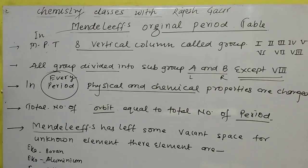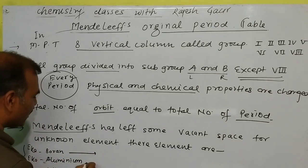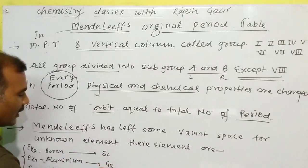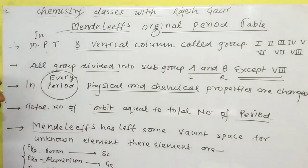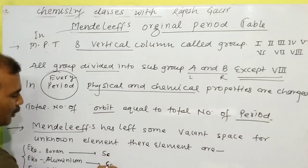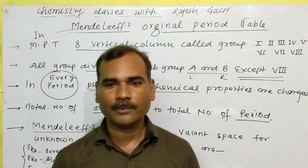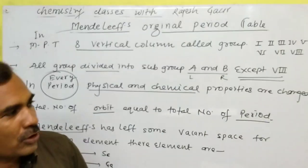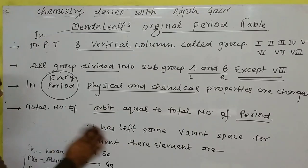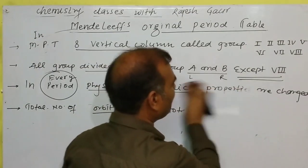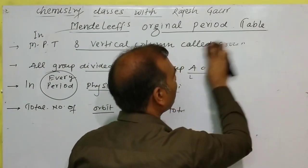Mendeleev predicted names using 'Eka' prefix for undiscovered elements. Later, Eka-Boron became Scandium, Eka-Aluminum became Gallium, and Eka-Silicon became Germanium. These are the special characters of Mendeleev's original periodic table — most most important.